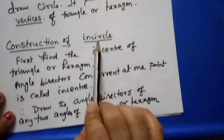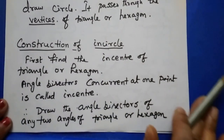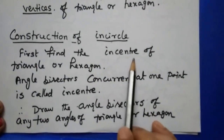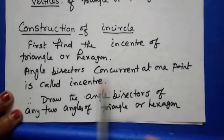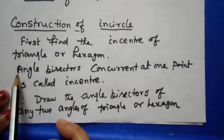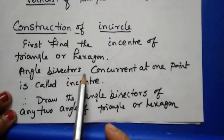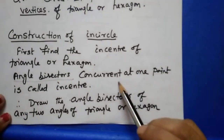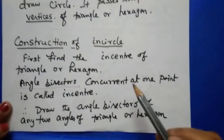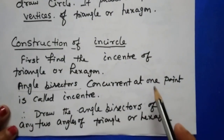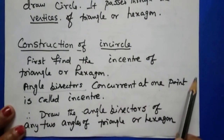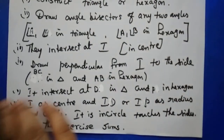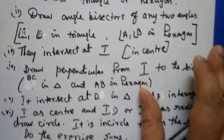Next, come to the construction of the incircle. Before that, you should know what the incenter is. The incenter is the concurrent point of all the angle bisectors. Draw the angle bisectors of any two angles — they intersect at a point called the incenter.